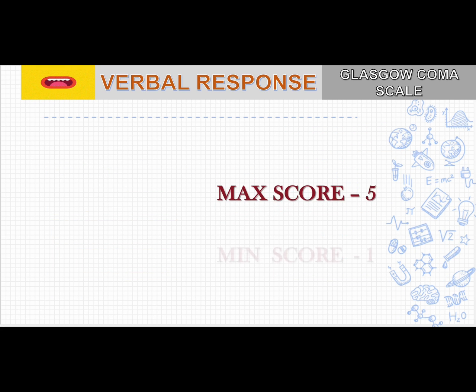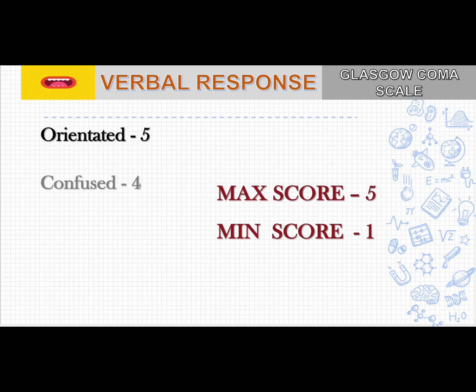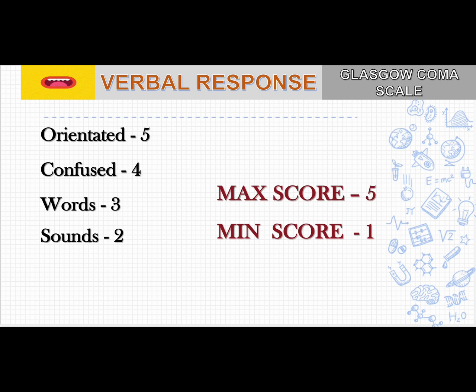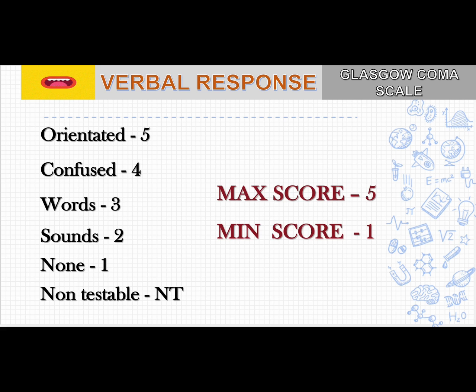The second component is verbal response. The maximum score is 5 and the minimum score is 1. The scores are: oriented is 5, confused is 4, words is 3, sounds is 2, none is 1, and non-testable is NT. Let's see in detail how you will assess verbal response.